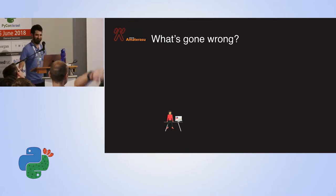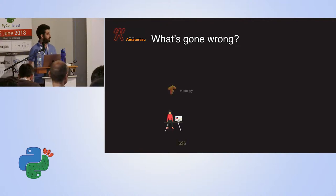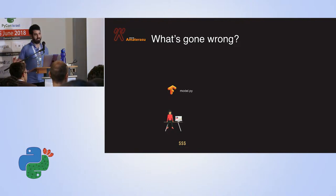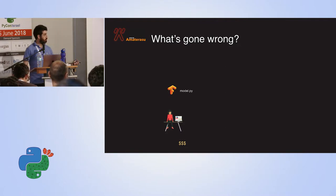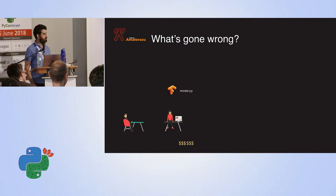Meet Susie. Susie is a data scientist. Susie wants to build a model using TensorFlow. In order to build a model — it might come as a surprise to the data community — you need data. So she goes around looking for someone to gather data in a principled way, and she finds John, who is a data engineer.